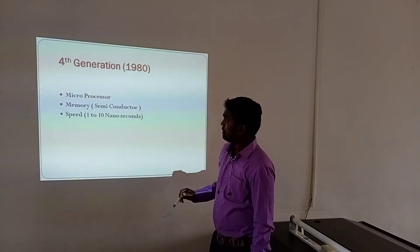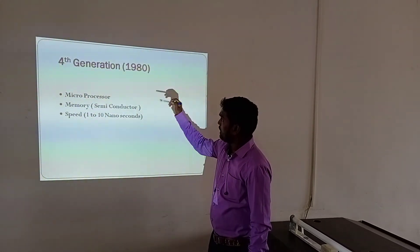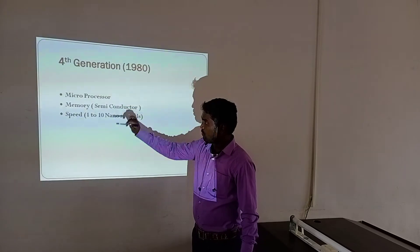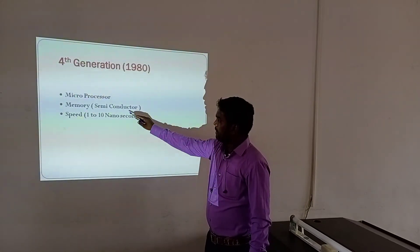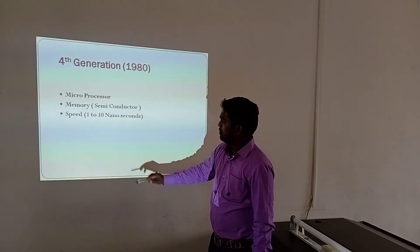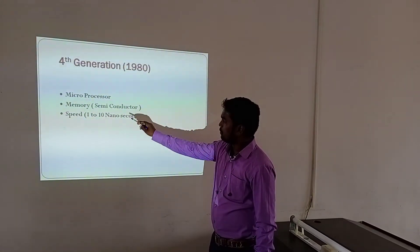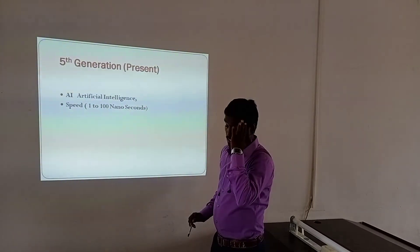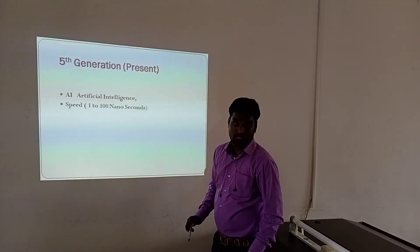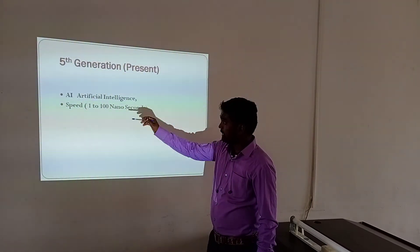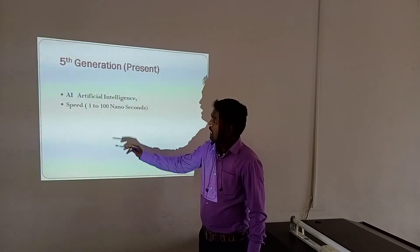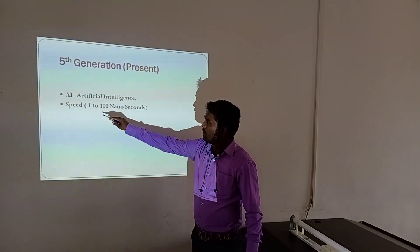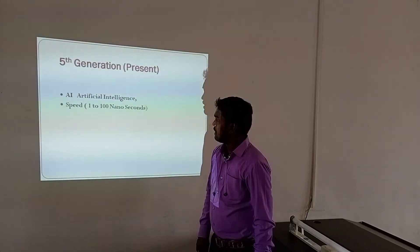Fourth Generation, 1980 onwards: Microprocessors and semiconductor memory, speed 1 to 10 nanoseconds. Fifth Generation: AI — Artificial Intelligence — with speed of 1 to 100 nanoseconds.